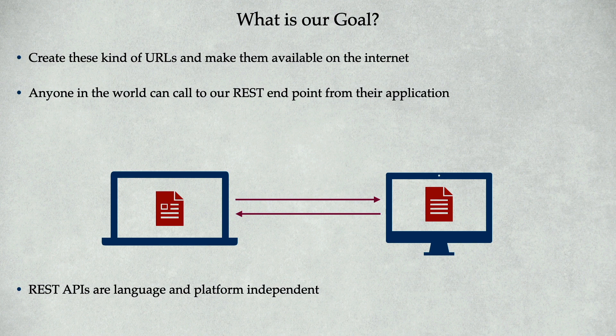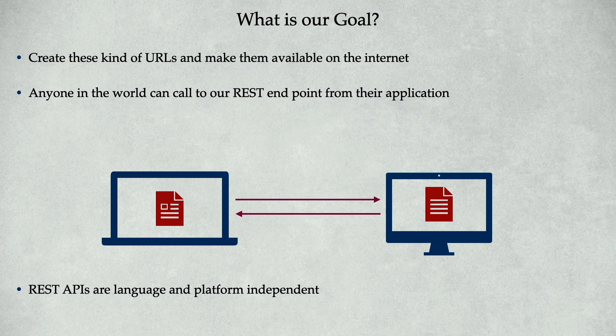For example, an Android application can make a request to our REST endpoint, consume it, and display our data in their application. Similarly, an iOS application can make a request to our REST endpoint, consume the data, and display it in their application. Not only Android or iOS — you can take any client application, even server-side applications like a .NET application or another Java application, and they can make a request to the REST endpoint and consume the data.